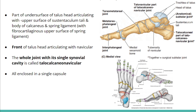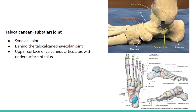The subtalar joint, or talocalcaneal joint, is located behind the talocalcaneonavicular joint. It is also a synovial joint where the upper surface of the calcaneus articulates with the under surface of the talus. You can see the subtalar joint highlighted in blue in the picture.